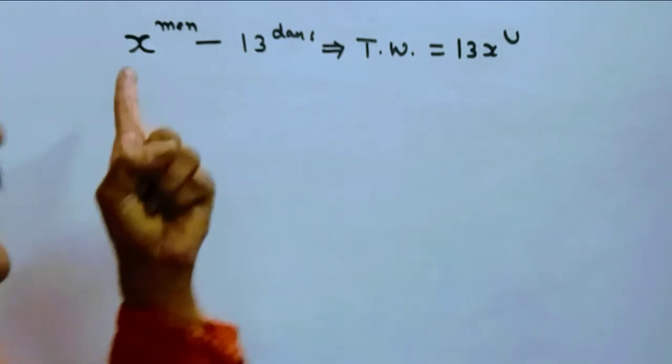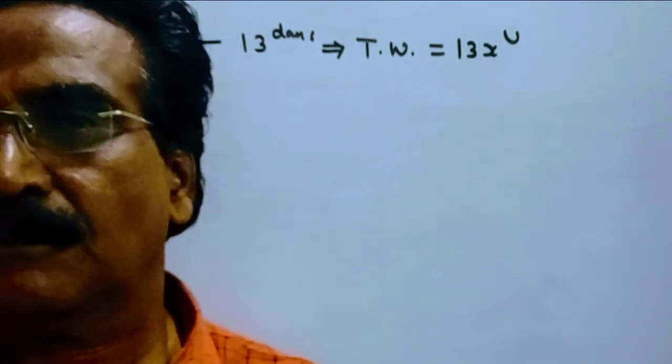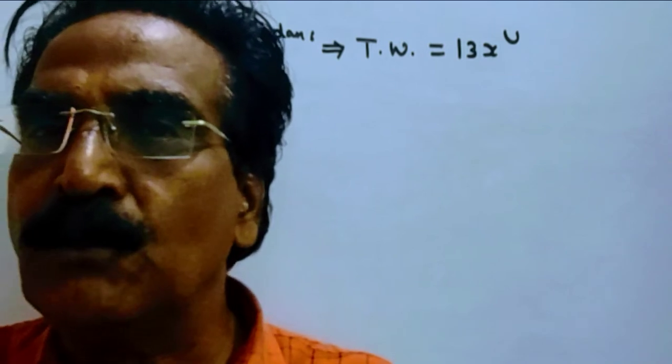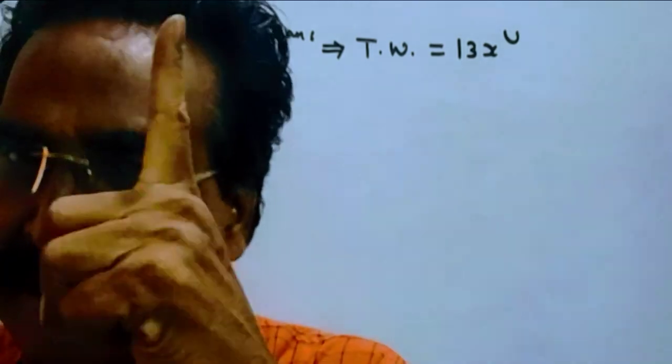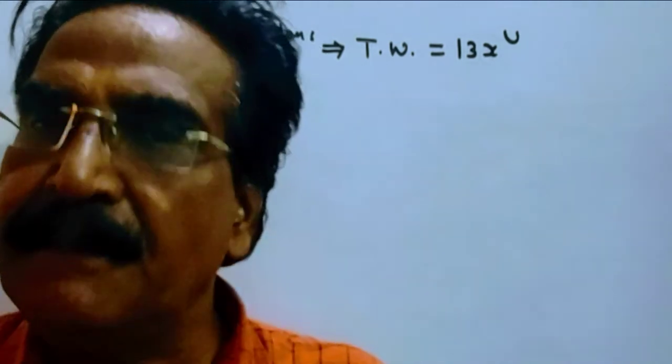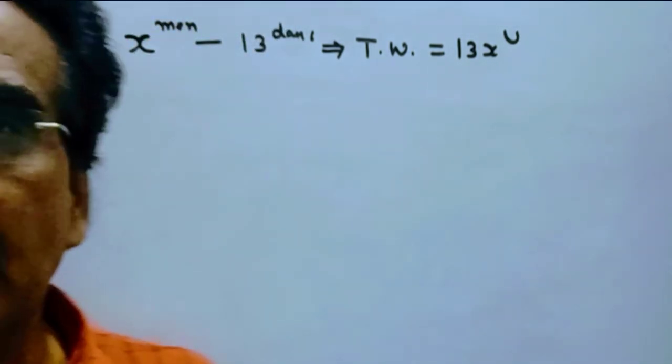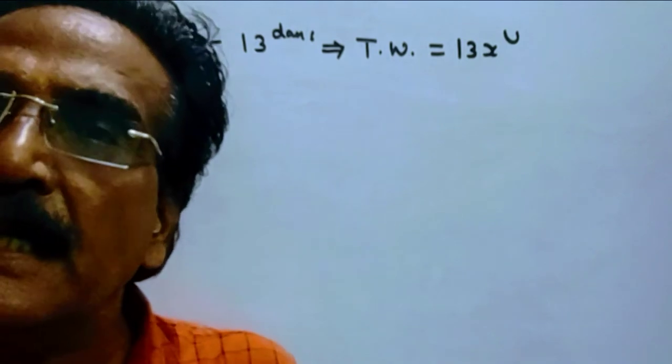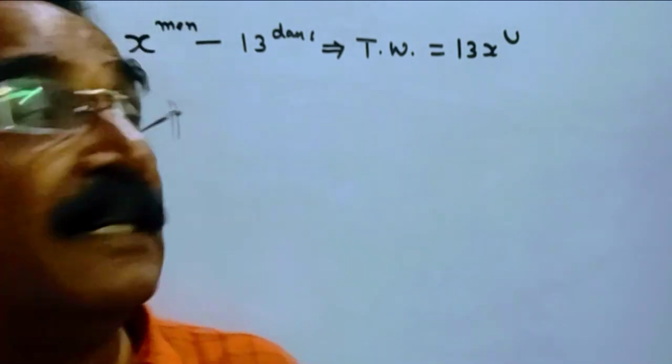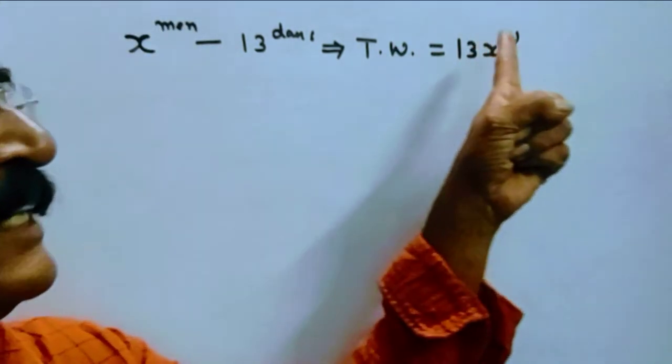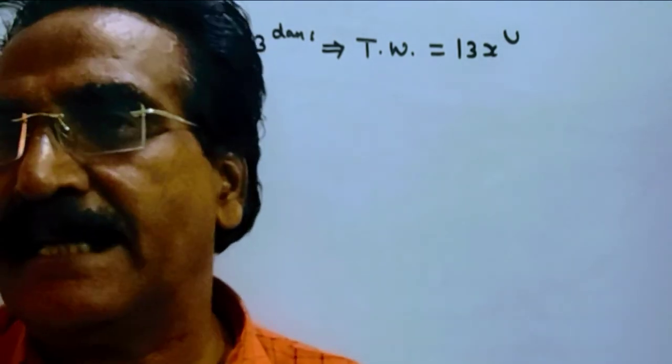Friends, say there are X men in the group and each man does one unit of work per day. Then X men can do X units of work per day. So in 13 days, they can do 13X units of work. So then the total work can be taken as 13X units.